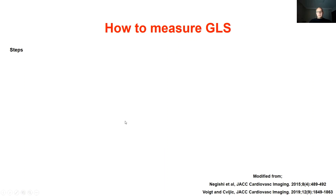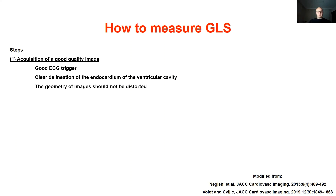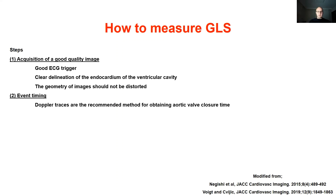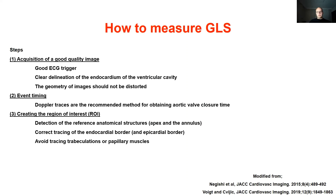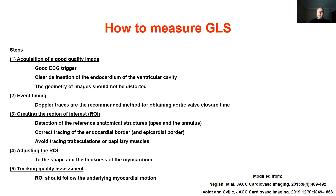To measure strain or GLS, there are several steps. First, a good quality image must be acquired, focused on the left ventricle with good ECG triggering. Endocardial borders should be visible during systole and diastole. Second, set up event timing — the best way is to use Doppler traces to define exactly aortic valve closure time. Then the region of interest can be created: reference structures should be focused on, endocardial and epicardial borders should not be exceeded, trabeculations and papillary muscles should not be traced, and the region of interest should be checked for tracking quality.